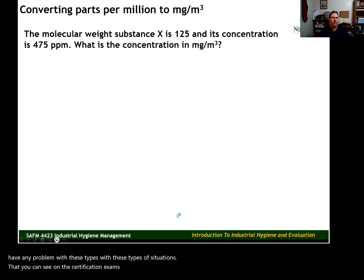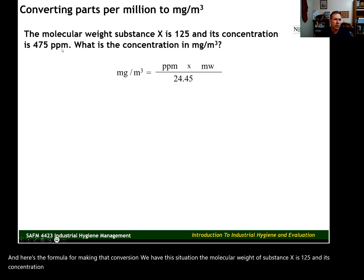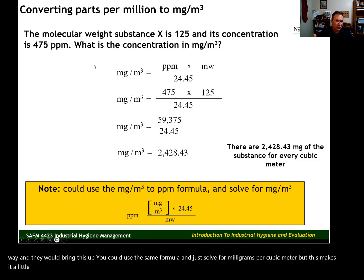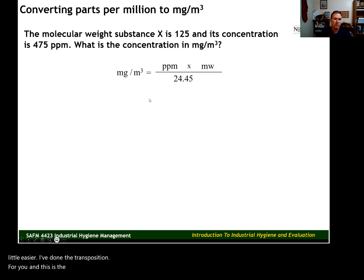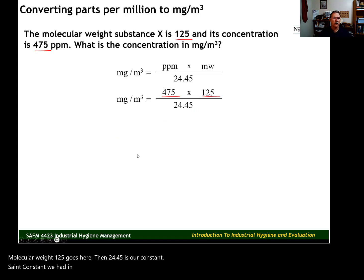Now let's convert from parts per million to milligrams per cubic meter. Here's the formula for that conversion. The problem: the molecular weight of substance X is 125 and its concentration is 475 parts per million — what is the concentration in milligrams per cubic meter? I've done the algebraic transposition of the original formula to make this easier. We plug in 475 for parts per million and 125 for molecular weight.